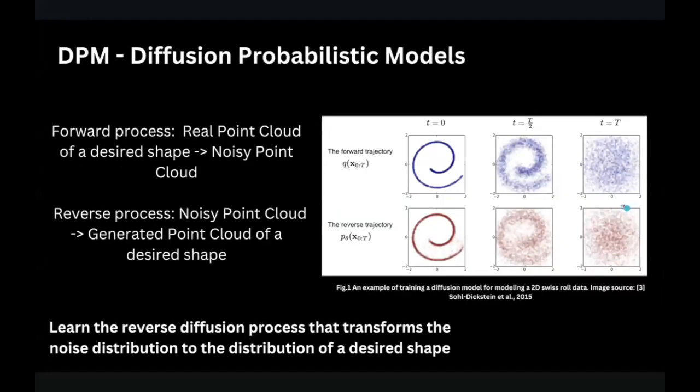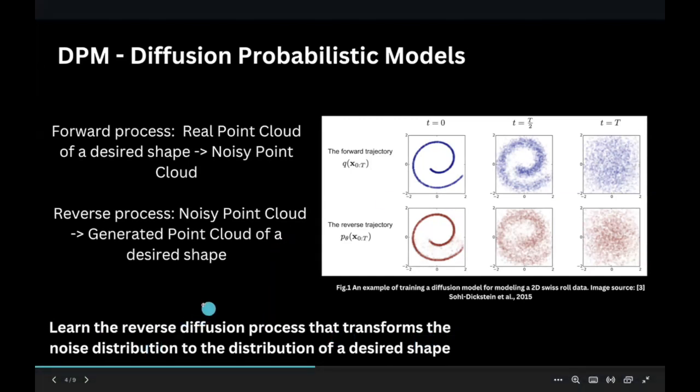The next one is diffusion probabilistic models. What do they do? They convert a pure point cloud into a noisy point cloud and then learn to recreate a clean point cloud like this from the noisy one. In the picture, you can observe the forward process of adding noise to a pure point cloud until it becomes unrecognizable. In the second picture, everything is different as a pure point cloud is recreated from a noisy point cloud. It may be not the same, but it's quite similar. The shape is similar, so it's good. And the main idea is to learn the reverse diffusion process that transforms the noise distribution to the distribution of a desired shape.